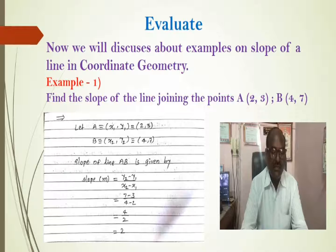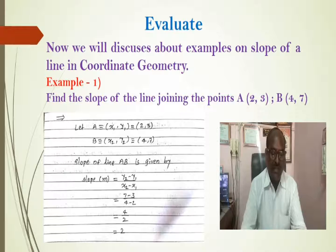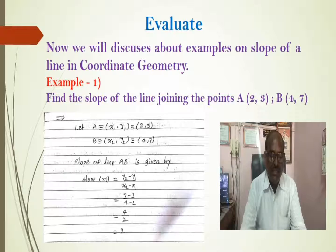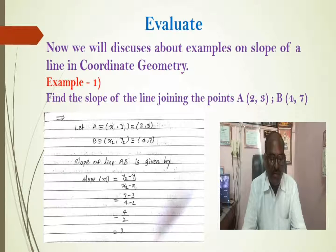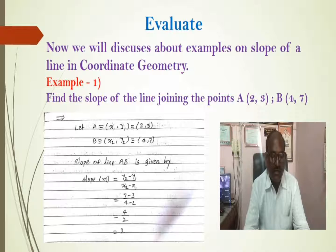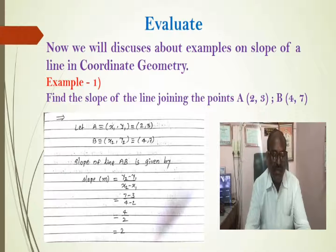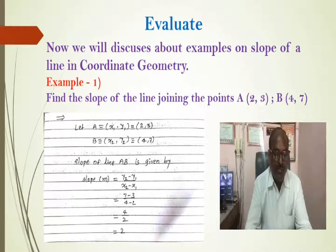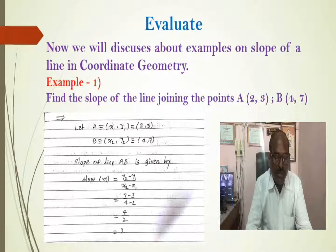Now we will see about examples on slope of the line in coordinate geometry. Example first, find the slope of the line joining the points A (2, 3) and B (4, 7). Let A = (x1, y1) = (2, 3) and B = (x2, y2) = (4, 7). Now, as defined above, slope of line AB is m = (y2 - y1)/(x2 - x1). Putting the values of x1, y1 and x2, y2, we see that (7 - 3)/(4 - 2), that is 4/2, the slope of line AB equal to 2.